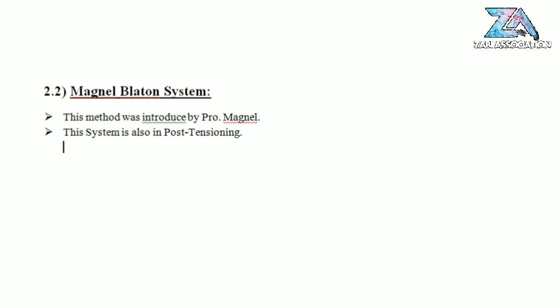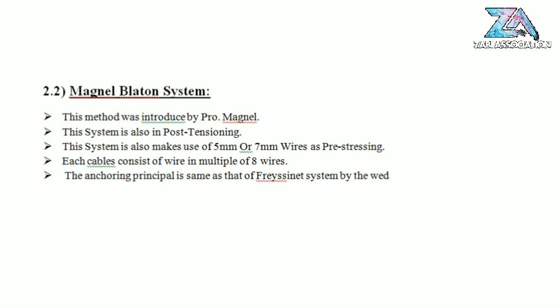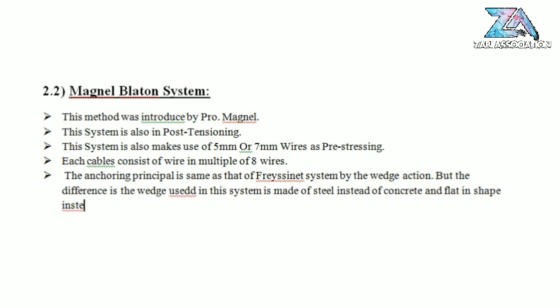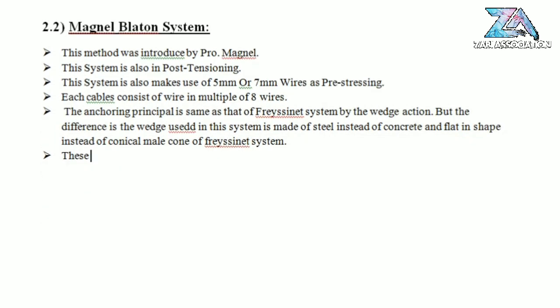The second system is the Magnel-Blaton system, introduced by Professor Magnel. This system is also used in post-tensioning and makes use of 5 mm and 7 mm wires as prestressing. Each cable consists of wires in multiples of eight. The anchorage principle is the same as the Freyssinet system using wedge action, but the difference is that the wedge used here is made of steel instead of concrete, and is flat in shape instead of conical.